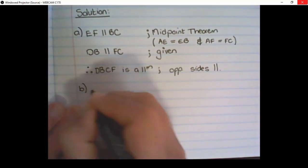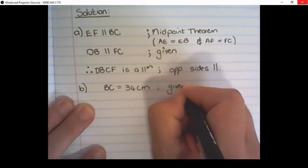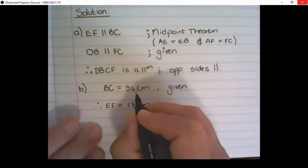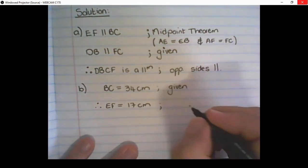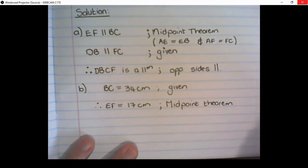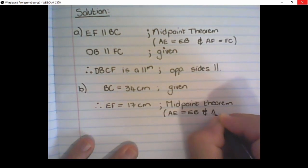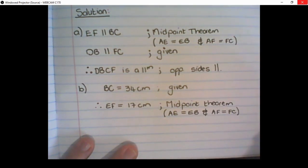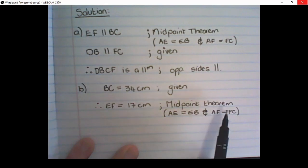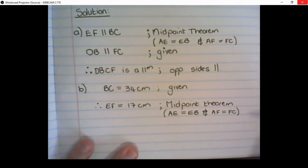The way we write it is BC equals 34 cm given. Therefore, EF is equal to 17 cm. That is half of BC. And the reason is midpoint theorem. And remember, we write the reason why we are using the midpoint theorem. This is not as important in grade 10 yet, but I would like you to learn the skill of writing why we can apply the theorem. So when we move on to grade 11 and 12, it is easy to justify the reason why we can apply certain theorems.